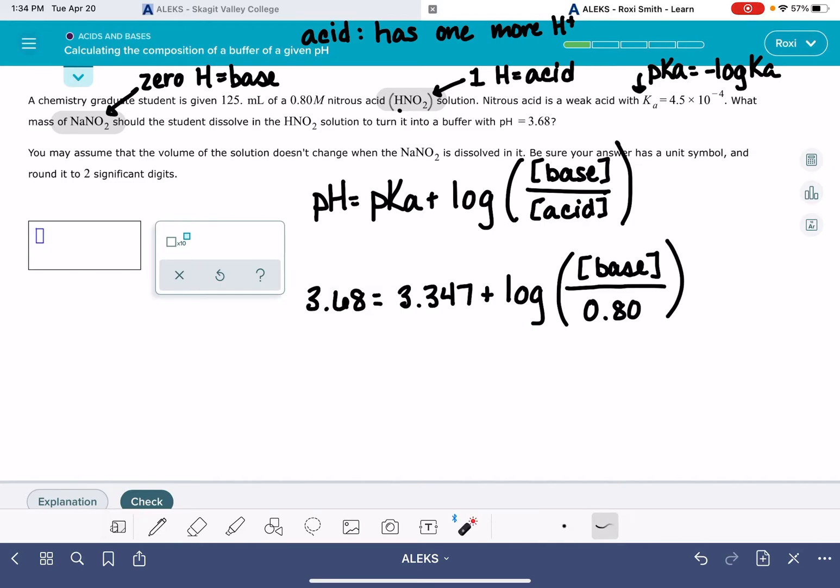And our first math step is just going to be to solve for the concentration of the base. I'm going to go 3.68 minus 3.347 to simplify this. And it gives me 0.333 is equal to the log of the concentration of the base over 0.8.